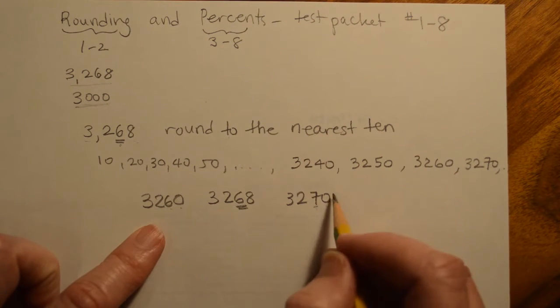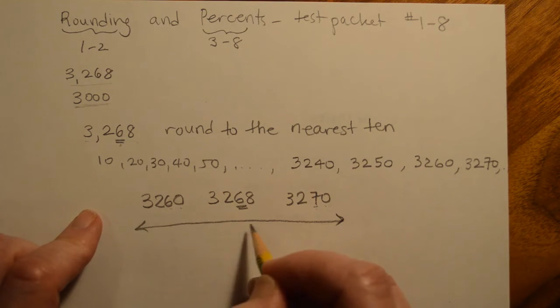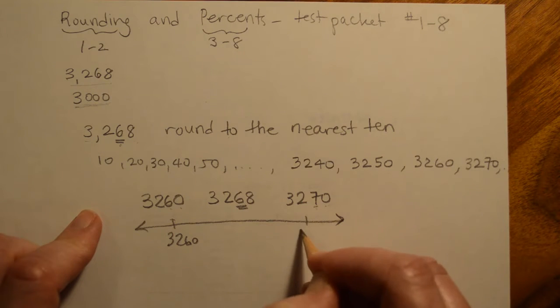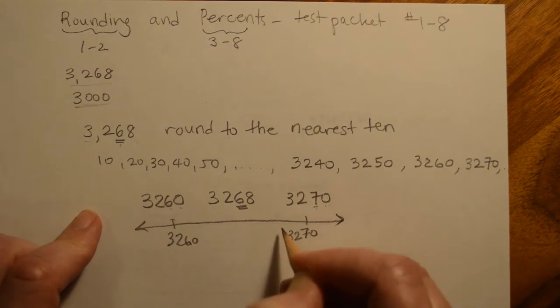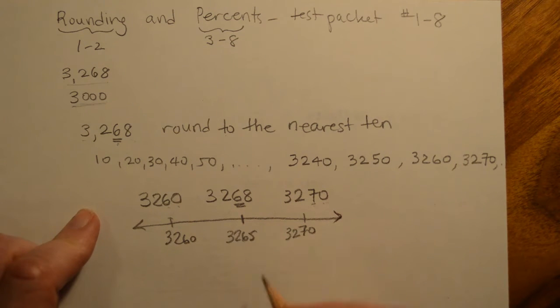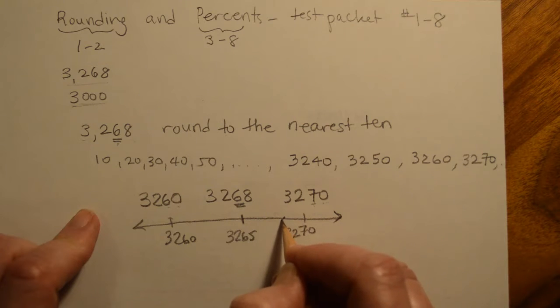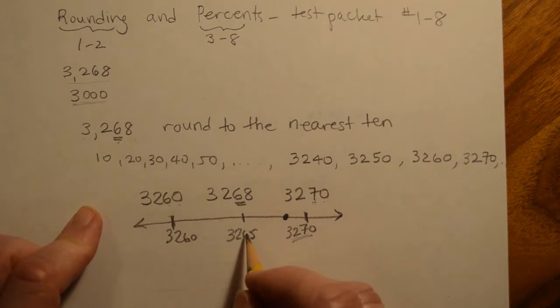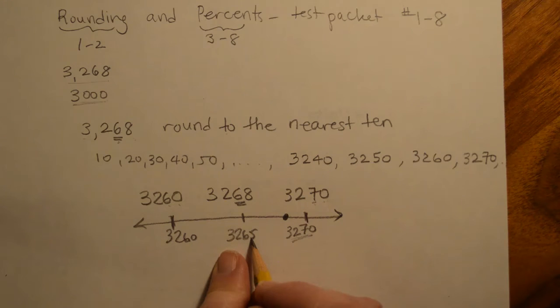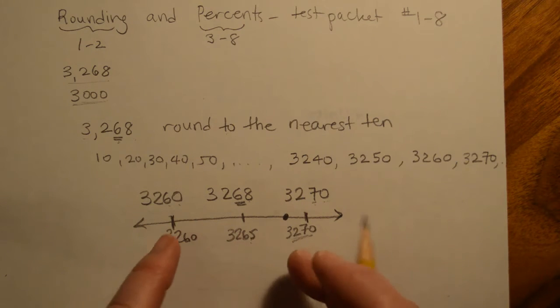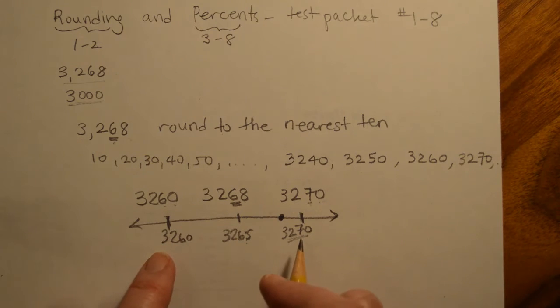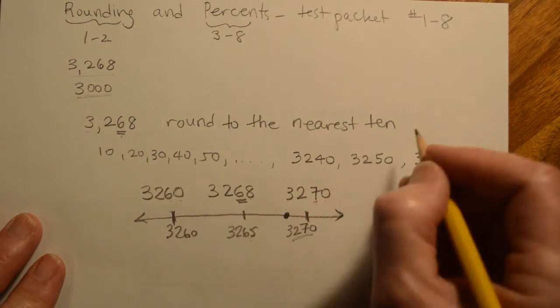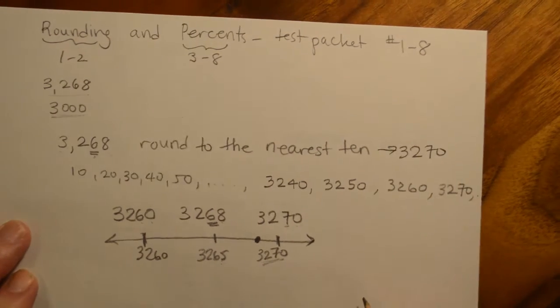So then we're just going to say, which one is this closer to? And if we did an actual number line, we would see that here would be 3,260 and 3,270, and right in the middle would be 3,265, and 3,268 falls right about here. So if we're trying to say, is it closer to this guy or this guy, it's definitely closer to this. How do we know that? Well, halfway is 3,265, but the eight is higher than the five, which means it pushes it to this side, it makes it closer to 3,270. So then that would mean if we were rounding 3,268 to the nearest 10, we would say it's 3,270.